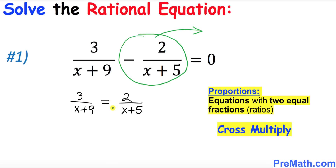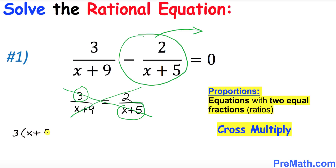We are going to solve this given equation by using cross multiplication — that means we're going to crisscross, multiply this way and multiply this way. So let's go ahead and multiply 3 times x plus 5, and on the other side I'm going to write 2 times x plus 9. So far so good.